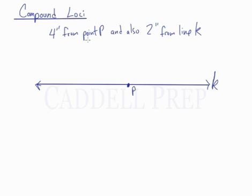We do this the same way we do other ones. We just look at one condition at a time. So we'll look at this condition first, 4 inches from point P, and then we'll look at the condition 2 inches from line K, and then we'll just determine what points satisfy both of them.